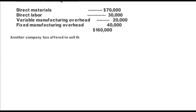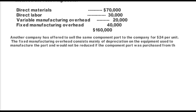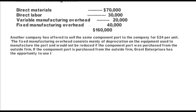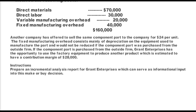However, another company has offered to sell the same component part to Grant for $24 per unit. The fixed manufacturing overhead consists mainly of depreciation on equipment used to manufacture the part and would not be reduced if the component part was purchased from an outside firm. If the component part is purchased, Grant has an opportunity to use the factory equipment to produce another product, which has a contribution margin of $28,000.